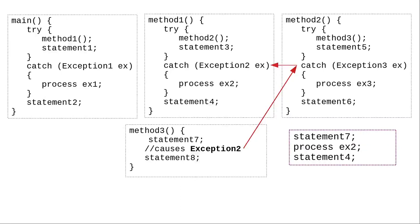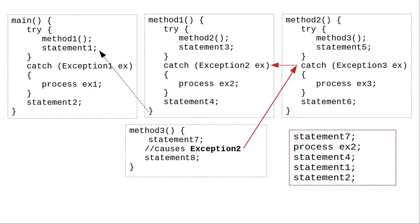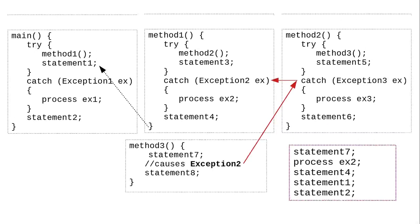Method 1 can catch exception 2. It does that, processes it, and executes statement 4. Control returns to main, which does statement 1 and statement 2.